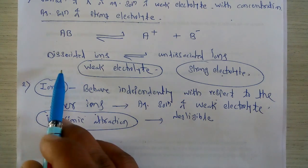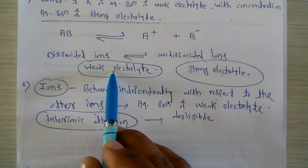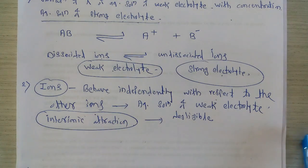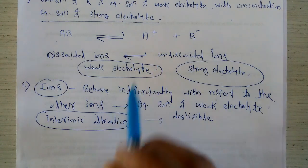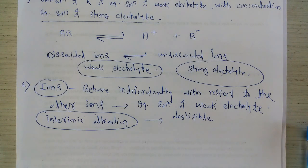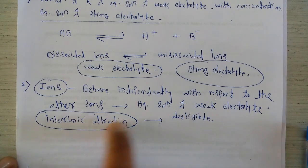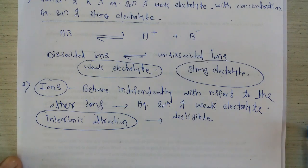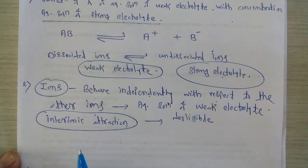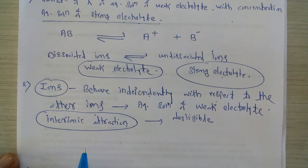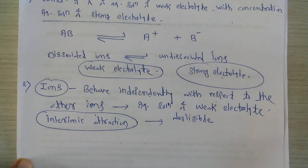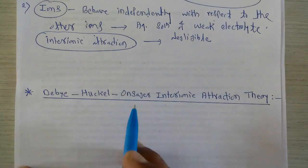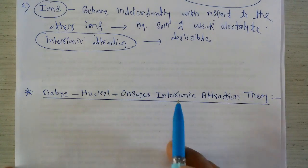The first drawback is regarding the equilibrium between dissociated ions and undissociated ions, and the second concerns interionic attraction between ions, which is very important for studying the dependence of equivalent conductance on concentration. To address these drawbacks, the next theory was proposed — the Debye-Hückel-Onsager interionic attraction theory, given by three scientists: Debye, Hückel, and Onsager.